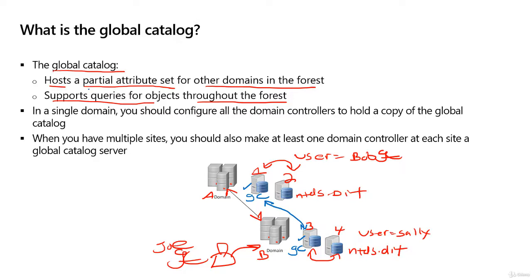When this says it hosts a partial attribute set for other domains in the forest, attribute is another word for property. When this replicates a user from domain A, it's only replicating properties or attributes that you would likely search — things like telephone number, email address, those types of things. It's not going to replicate things that it thinks you would never search for. For example, there's an attribute named account expires that will show you if a user account is going to expire. Only people that work in IT would ever look at that attribute, so that's not an attribute that would ever be replicated to your global catalog server.